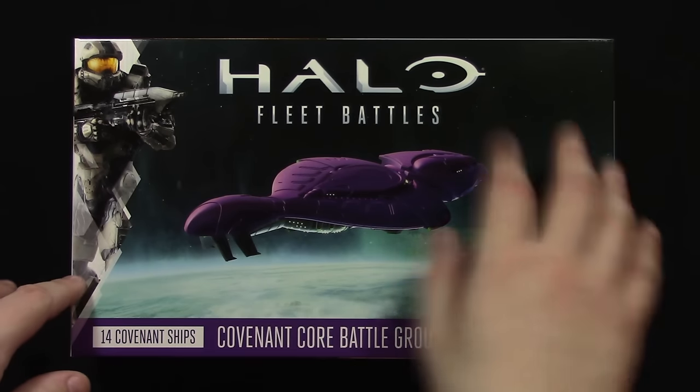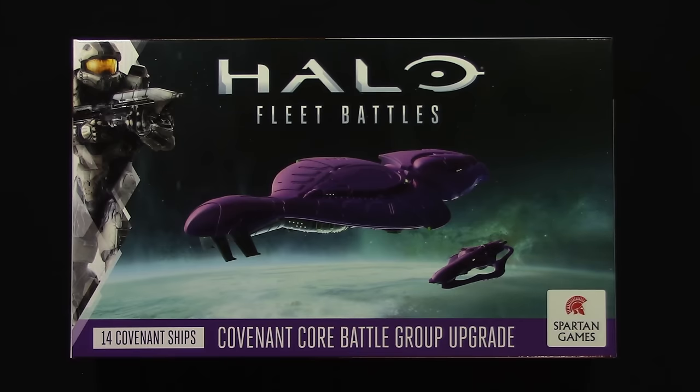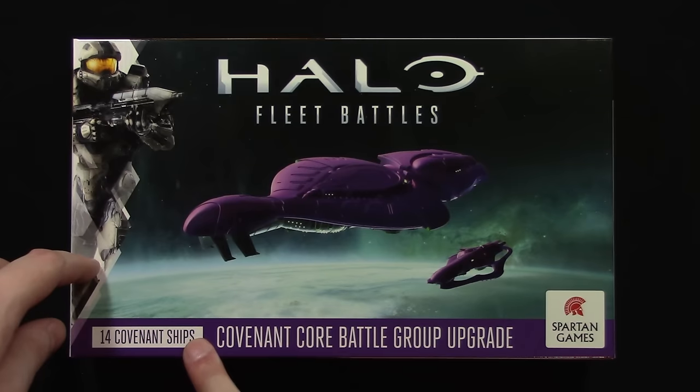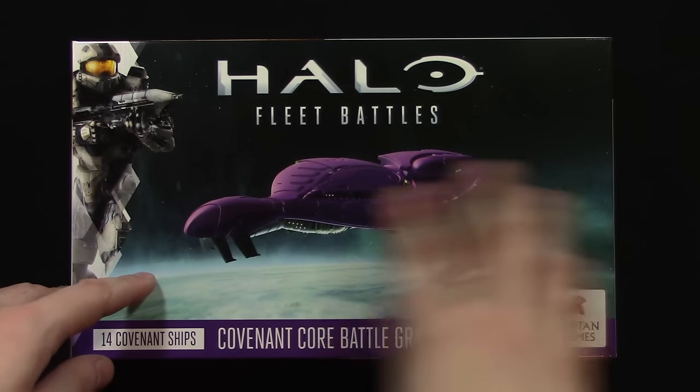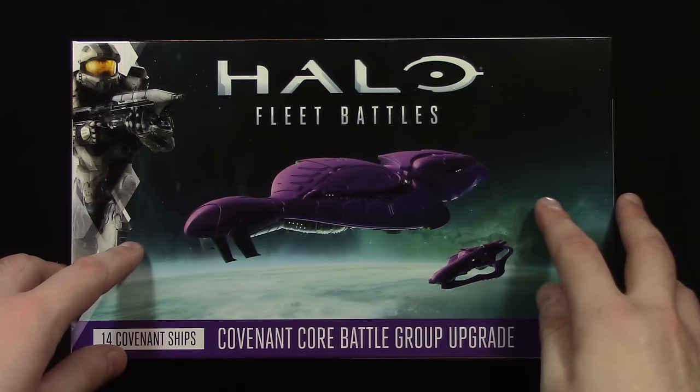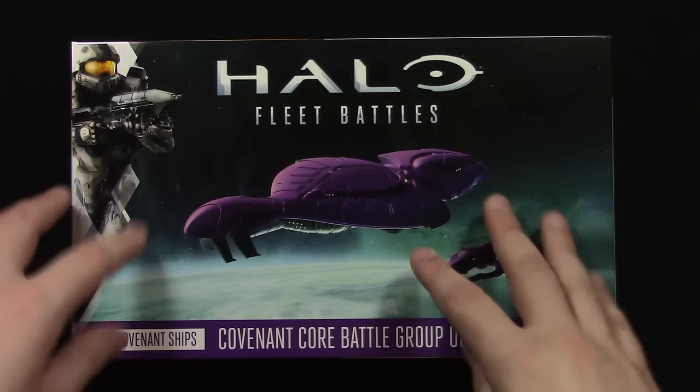On the front of the box you've got the usual Halo Fleet Battles logo, Spartan Games, you've got a Spartan because why wouldn't you have a Spartan on the box. Covenant Core Battle Group Upgrade, 14 Covenant ships in this box and you also get some artwork of the ships themselves. So you get the CCS Battlecruiser and the STV Heavy Corvette in this box.